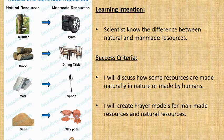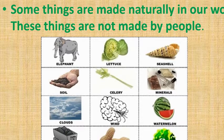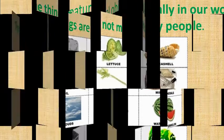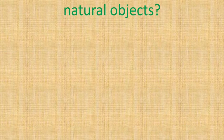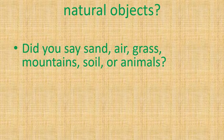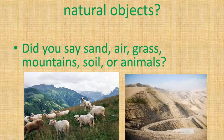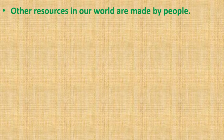Naturally made: some things are made naturally in our world. These things are not made by people. Did you name some other natural objects? Did you say sand, air, grass, mountain, soil, or animals?